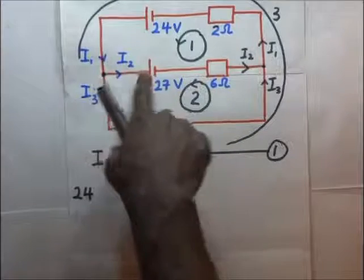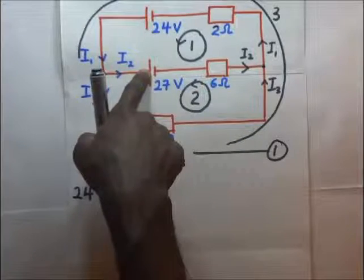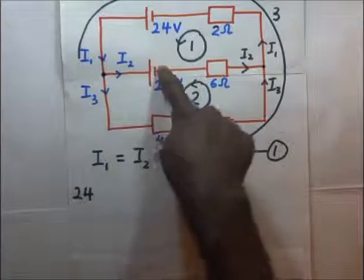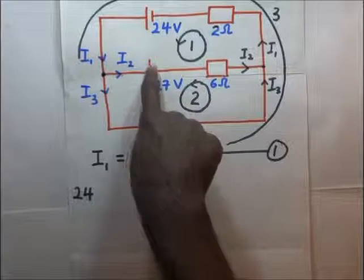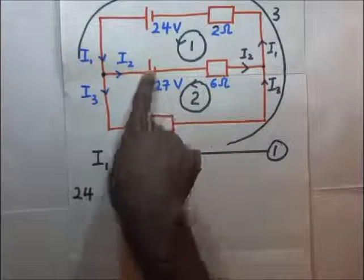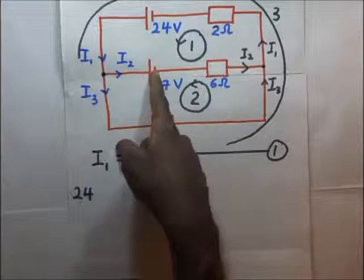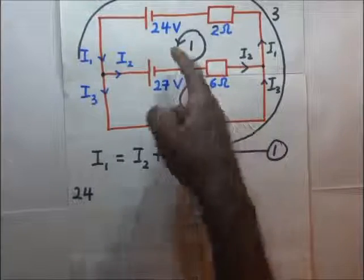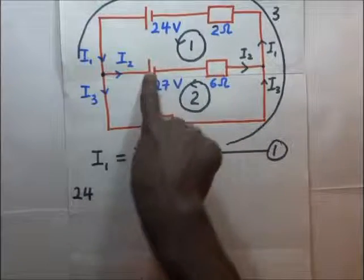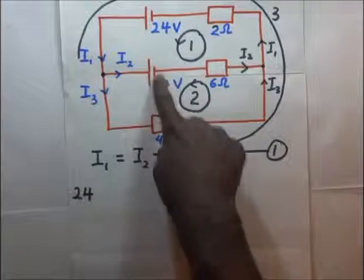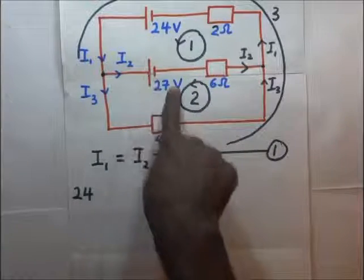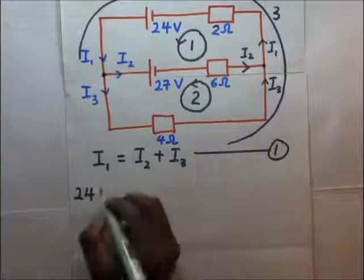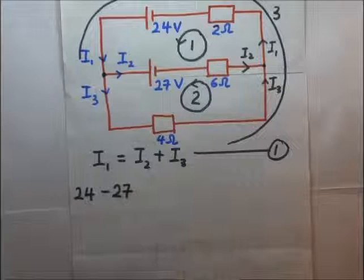We also have another EMF, but the loop is moving in the opposite direction to the flow of current in this cell. Since the loop is in the direction opposite to the flow of current within the cell, the EMF of this cell is negative, so this becomes minus 27 volts.